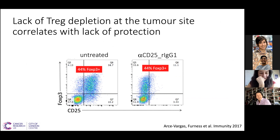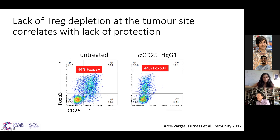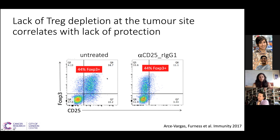A single shot of the new anti-CD25 engineered to interact properly with mouse activating FC receptors gives for the first time two complete responses out of 13 mice. The responses are quite interesting — tumors get really big and some collapse, others relapse. That activity synergizes extremely well with anti-PD1, now giving 11 out of 14 complete responses, with tumors reaching very established sizes before collapsing.